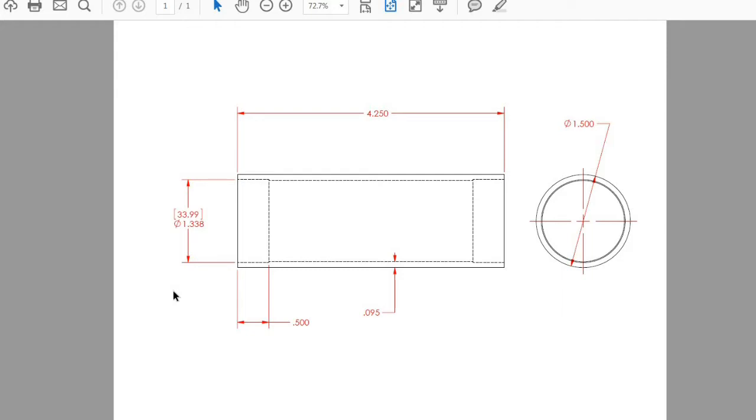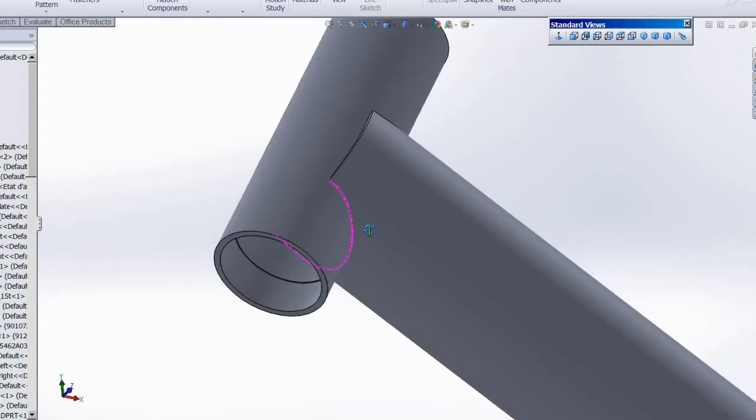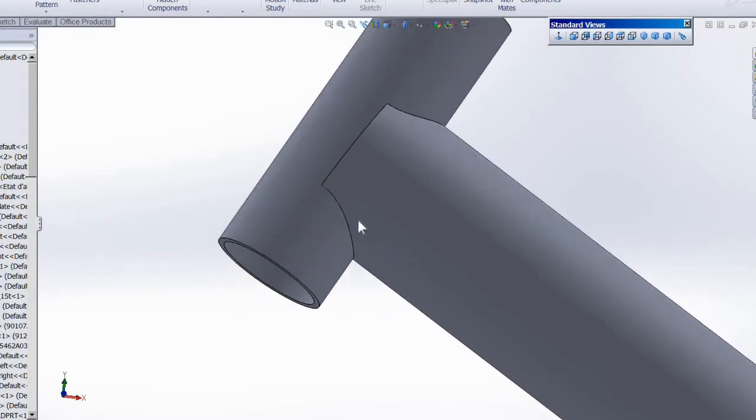The cups measure out at about 1.341, which gives you about a 4 thousandths press fit. Personally I like to go a little looser than this, so I shoot for about 1.338 or 33.99 millimeters. It makes it a little easier to get your cups out if you need to change your headset.